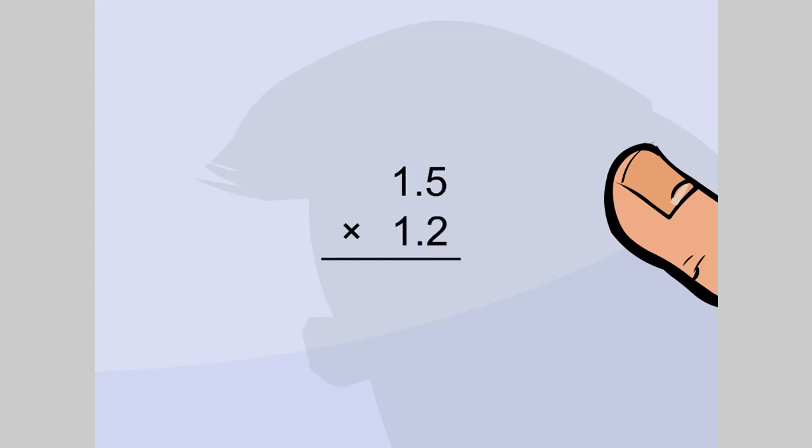We write the numbers one under the other. We multiply the last digits.